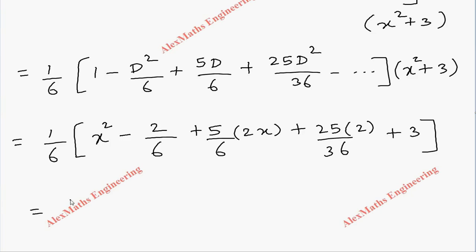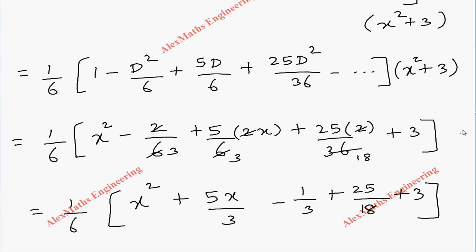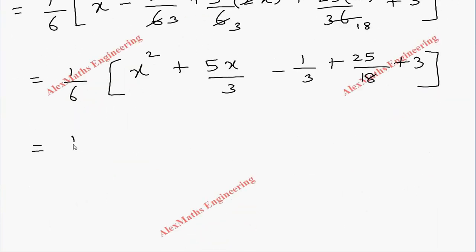Now I need to group the similar terms. This is the x² term and this is the x term. So after canceling we get 1/6[x² + 5x/3 - 1/3 + 25/18 + 3].